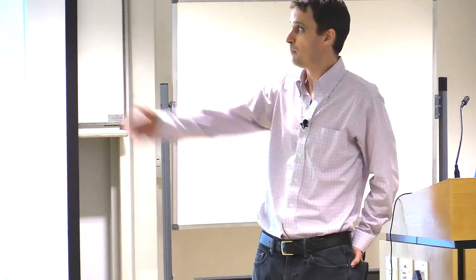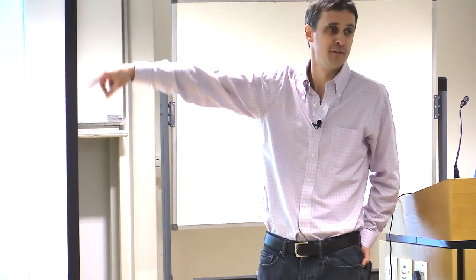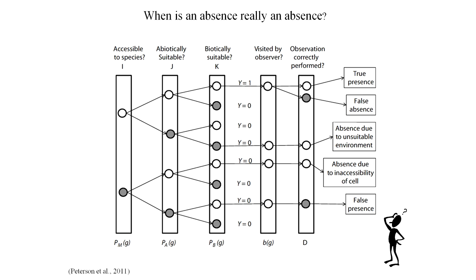We need to be really careful about absence records and what they mean in our data set. How good's the sampling? Is the species really not there? Why is it not there — is it not there because it's never had the opportunity to move there? Is it not suitable? Is it not found there because it's out-competed by another species? It might not be there because it's out-competed, but the environment might still be right abiotically. If our environmental variables are abiotic, then we're falsely informing the model that the species isn't there because of the abiotic environment. You'll begin to see the complexities of dealing with absence data.